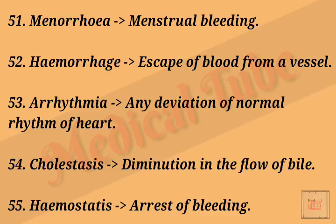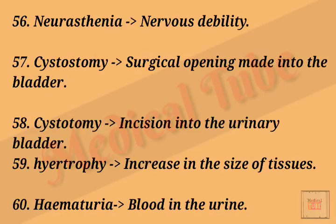Number fifty-two: hemorrhage means escape of blood from vessels. Number fifty-three: arrhythmia means any deviation from the normal rhythm of the heart. Number fifty-four: cholestasis means diminution in the flow of bile. Number fifty-five: hemostasis means arrest of bleeding. Number fifty-six: neurasthenia means nervous debility.